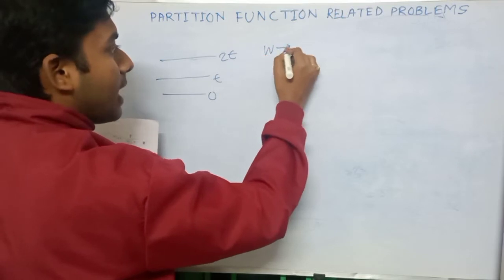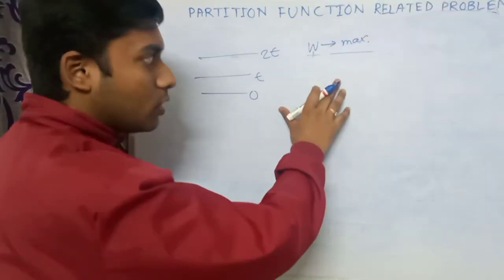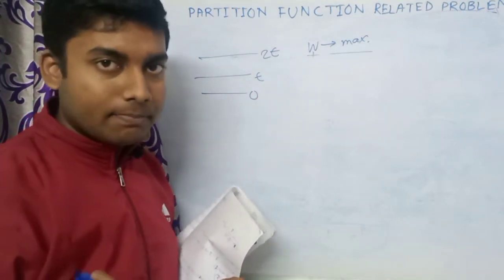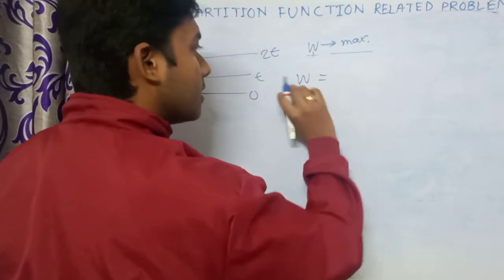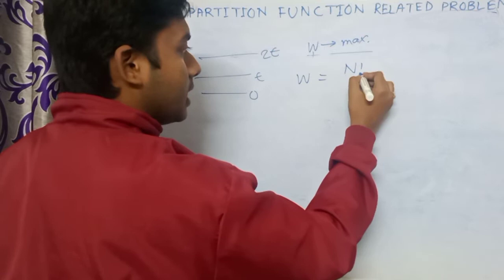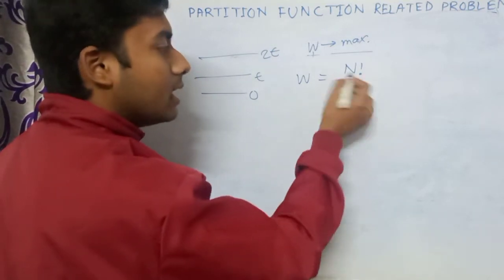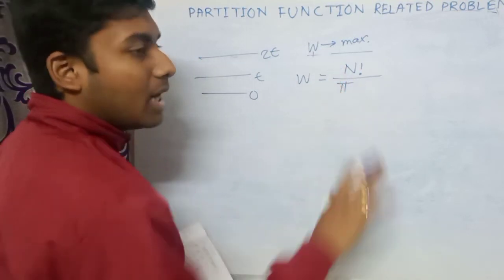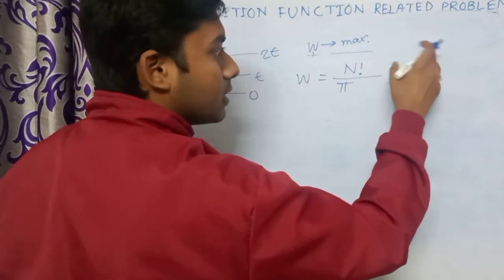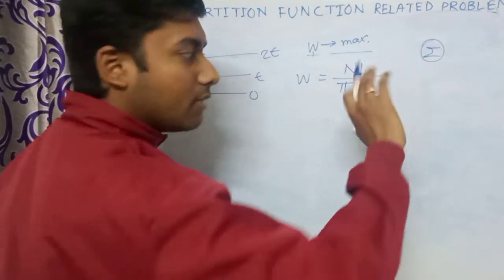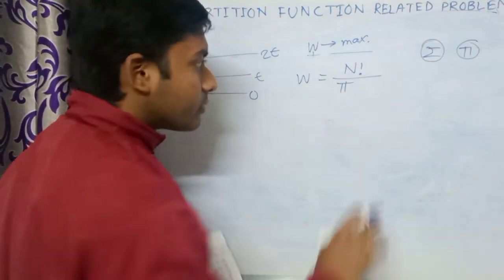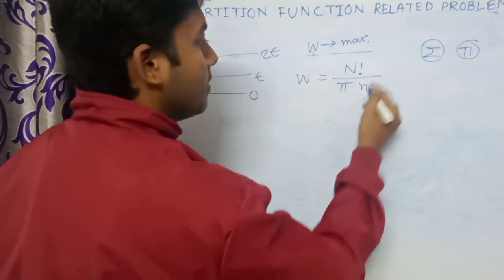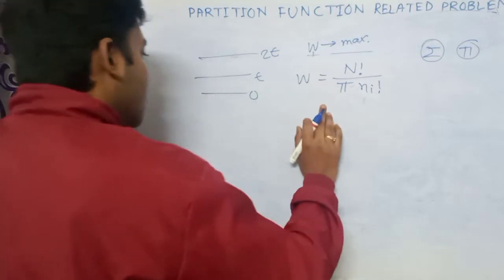In Maxwell-Boltzmann statistics, the number of microstates for any macrostate is given by W = N! divided by Π(nᵢ!), where N is the total number of particles and the denominator is the product (using the pi symbol for multiplication) of the factorial of the number of particles nᵢ in each energy level.